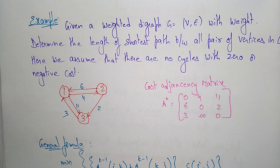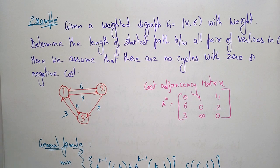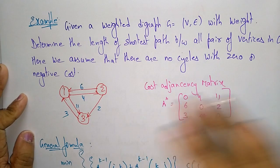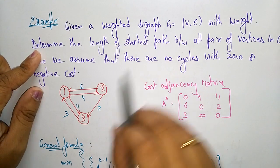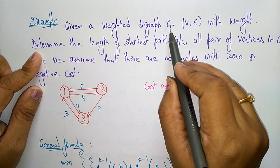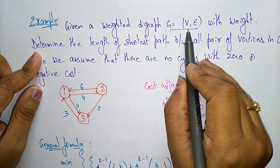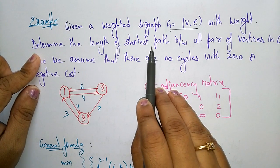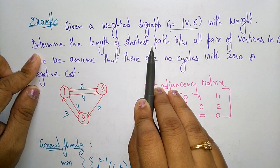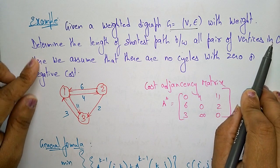Hi students. Let us continue with the topic of the all-pair shortest path algorithm. In the previous video I gave an algorithm for the all-pair shortest path. Now let us take one example. Here is a weighted directed graph G with vertices V and edges E with weights. We have to determine the length of the shortest path between all pairs of vertices in G.